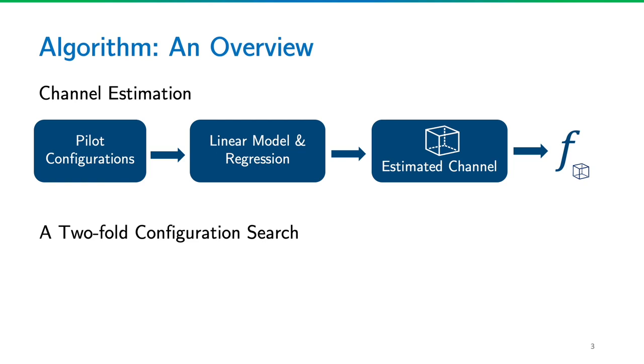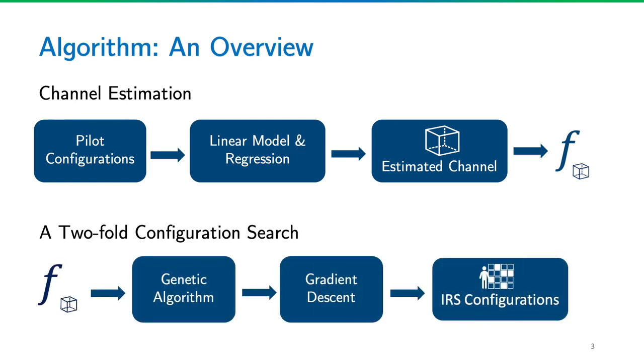For the second sub-problem, which is configuration search, we use the mapping f to search the IRS configuration space. Two algorithms, a genetic algorithm and a gradient descent algorithm, are used sequentially to optimize an IRS configuration for each user.